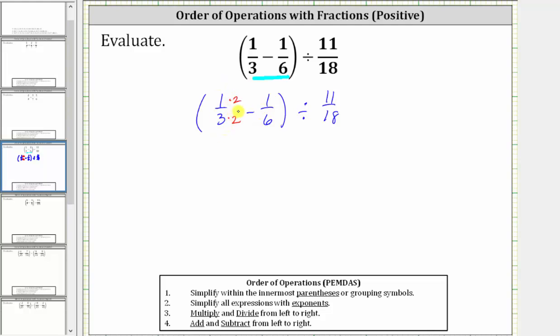Notice 1/3 is equivalent to 2/6, which gives us the quantity 2/6 minus 1/6, and we still have divided by 11/18. And 2/6 minus 1/6 is 1/6, giving us 1/6 divided by 11/18.